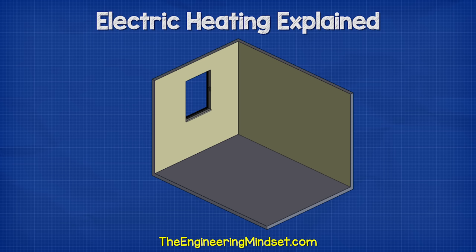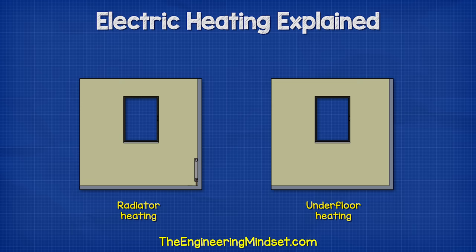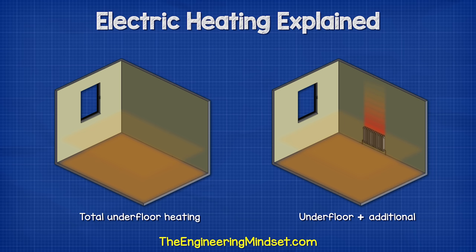Ordinarily, we might find a forced air heating vent or a single radiator on one of the walls, which is either electric, hot water, or steam heated. This will be a high temperature, as it has a relatively small surface area. Hot air rises, so this leads to poor thermal distribution and also poor thermal comfort within the room. Compare this to underfloor heating and we see it's more evenly distributed. We can have either total underfloor heating, or we can combine this with an additional heat source for those extremely cold winter days.